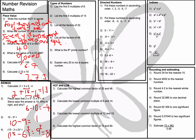Now we're looking at types of numbers. Question number 1: list the first 5 multiples of 8. The word multiples just means times tables, so the 8 times table: 8, 16, 24, 32, and 40.